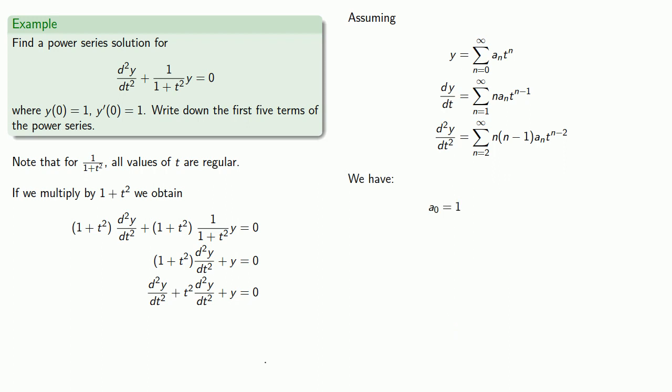Likewise, our initial condition gives us y'0 is equal to 1. So differentiating, we find that y'0 is equal to a1. And so a1 is equal to 1. And so these give us the coefficients of the first two terms in our series. And we can begin writing the series.